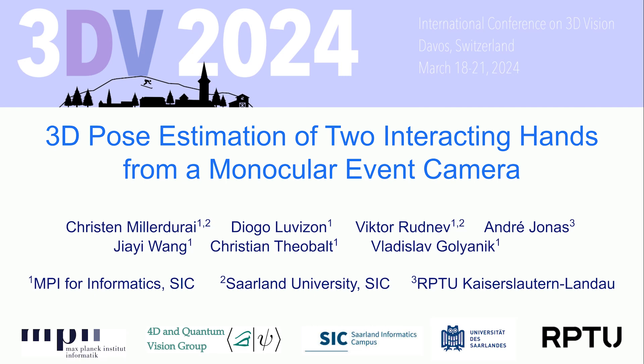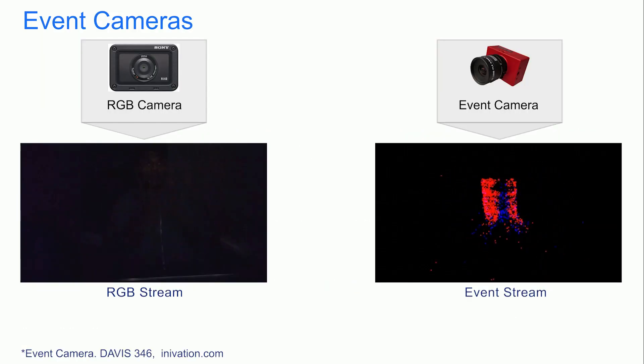In this submission, we propose the first approach to reconstruct two interacting hands in 3D using a monocular event stream. Event cameras record streams of asynchronous per-pixel intensity changes called events. Due to their high temporal resolution and high dynamic range, event cameras can operate under low lighting conditions and capture higher speed motions.